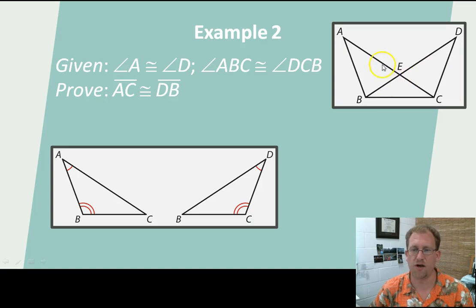Here we have two overlapping triangles. And this is going to be a common thing that you're going to have to work with, where two triangles share some aspects of each other. Given that angle A and D are congruent, and angle ABC is congruent to angle DCB, we're going to want to prove that AC, this line here, is congruent to DB, this line here.